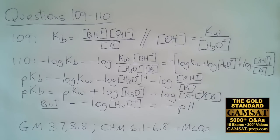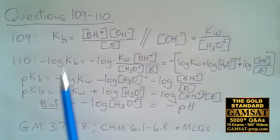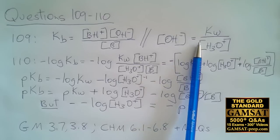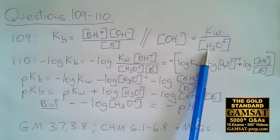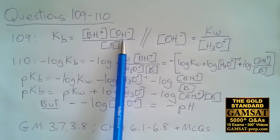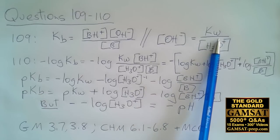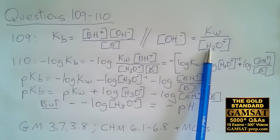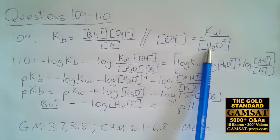We are given various equations, all of which ideally you would already know. The question asks for the relationship between Kb and H3O+. We are already given the equation for Kb, and all the answer choices have Kw in them, so we know we'll need that equation since it also contains H3O+. None of the answer choices have OH⁻, so we isolate OH⁻ from Kw and replace OH⁻ with Kw over H3O+. The answer is A.